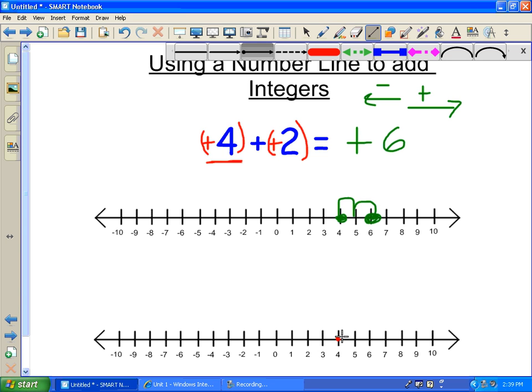So starting at positive 4, right here, I'm going to draw my arrow with 2 more, or positive 2, and there's my answer. So whether you go jumping like that, or whether you draw straight arrows, both are acceptable.